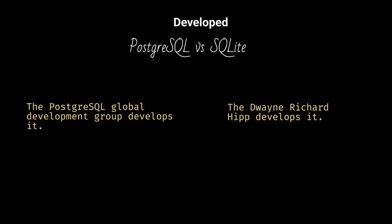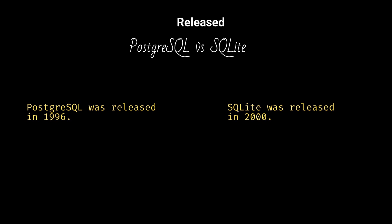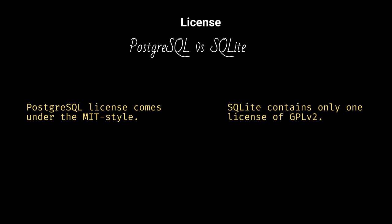The PostgreSQL Global Development Group develops PostgreSQL, while Dwayne Richard Hipp develops SQLite. PostgreSQL was released in 1996, and SQLite was released in 2000. The PostgreSQL license comes under the MIT style, while SQLite contains a GPLv2 license.